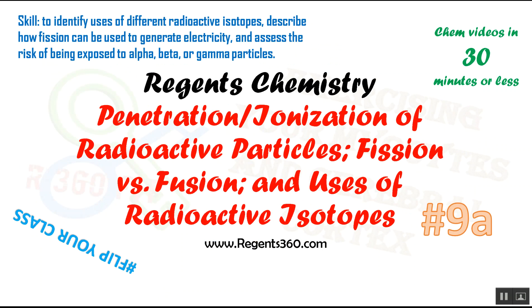Hi everyone, this is video 9A of the Regents Chemistry Curriculum. Today we're going to be talking about the penetration and ionization power of different radioactive particles such as alpha, beta, and gamma. We're also going to distinguish between fission and fusion and talk about the uses of different radioactive isotopes.